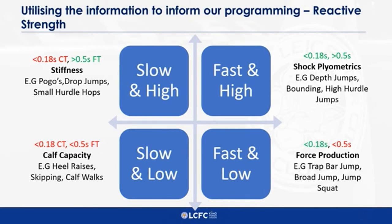Towards the bottom right are the athletes who are really quick off the ground — less than 0.18 seconds — but they struggle to produce a large amount of force. They struggle with the height, so therefore we need to work on more force production: your strength-speed type work.